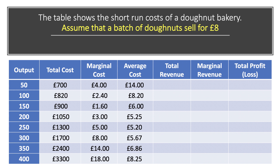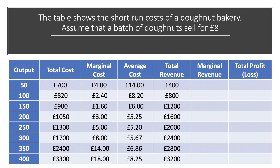Here are our outputs going up in units of 50, with data on total cost from which we can work out the marginal cost of each extra box of doughnuts, and the unit cost which is total cost divided by output. For total revenue, each box sells for eight pounds, so we multiply price by output. That revenue rises in blocks of £400 for every 50 boxes sold. Because the price stays the same, marginal revenue is constant at eight pounds.